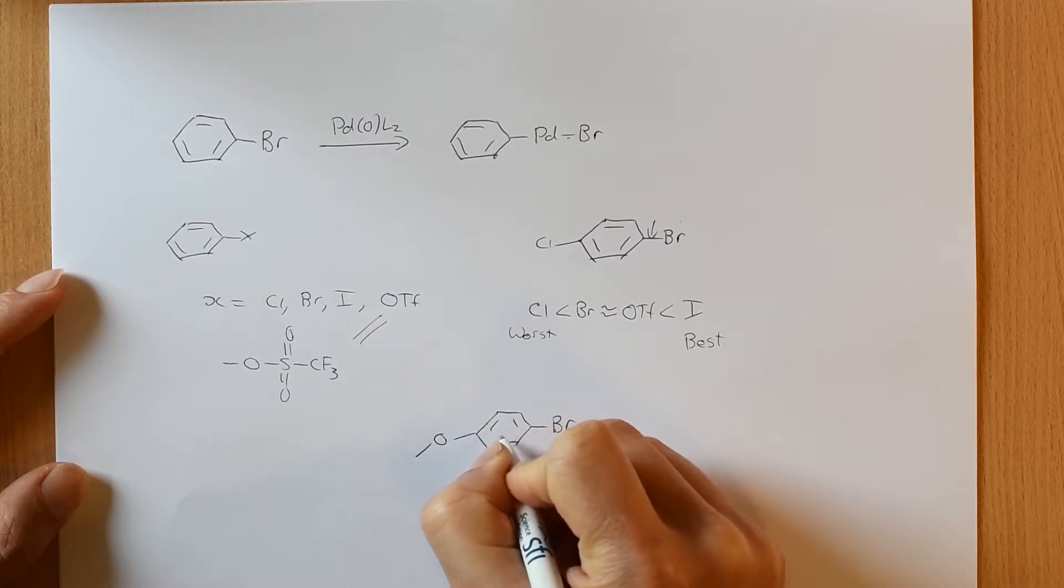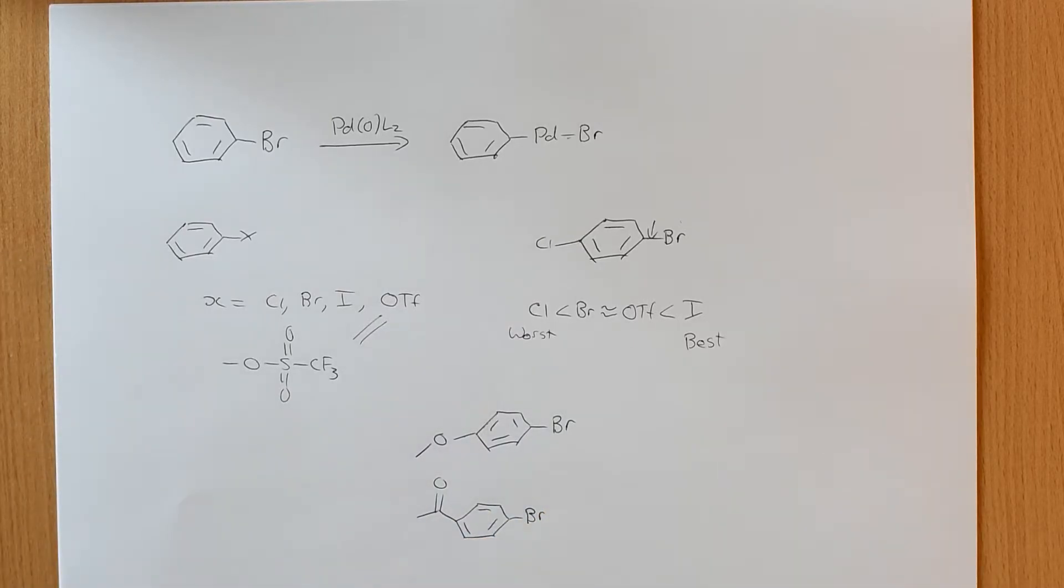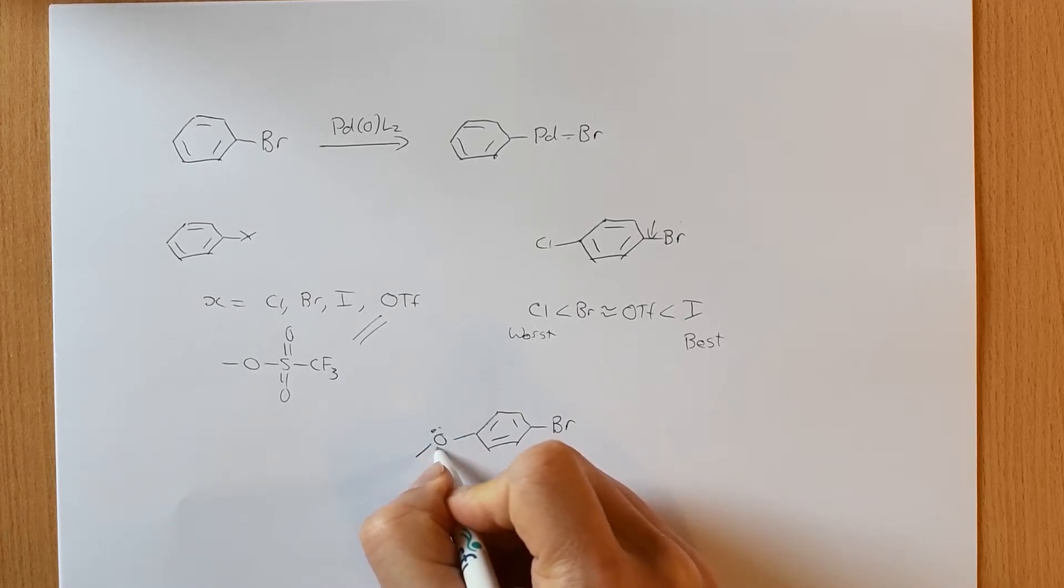Which is going to be better? This molecule, or this molecule. In one case, this carbon has an electron-donating group. So this has a lone pair. It can donate by resonance.